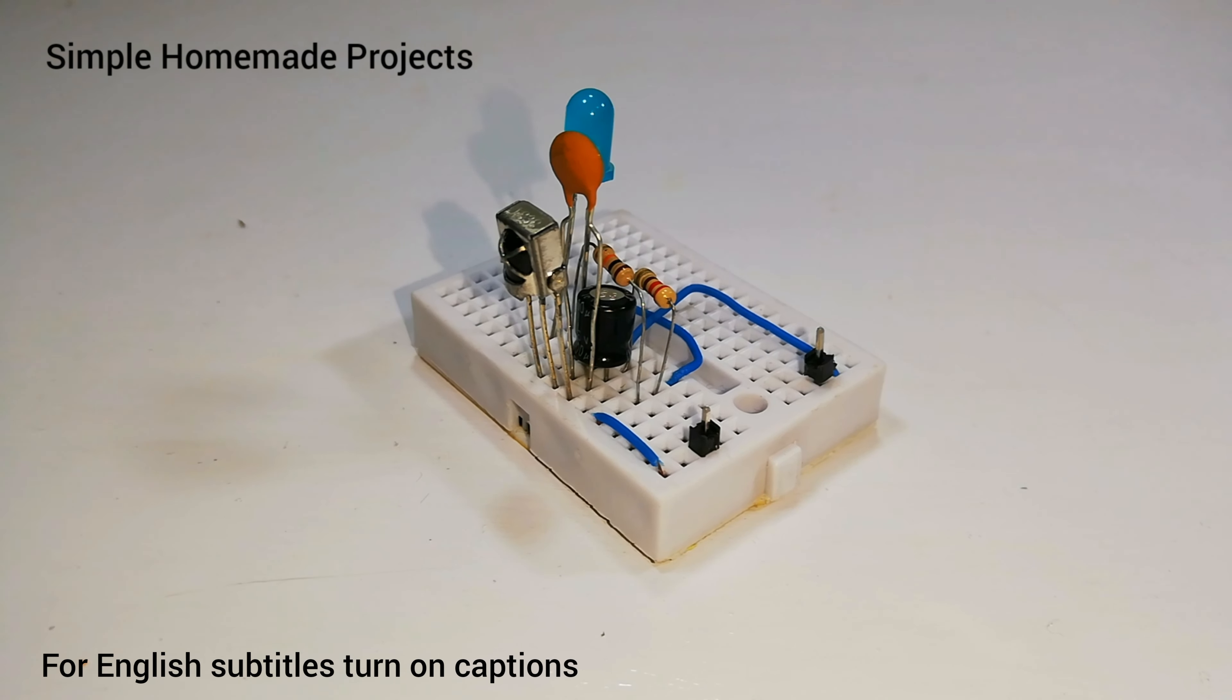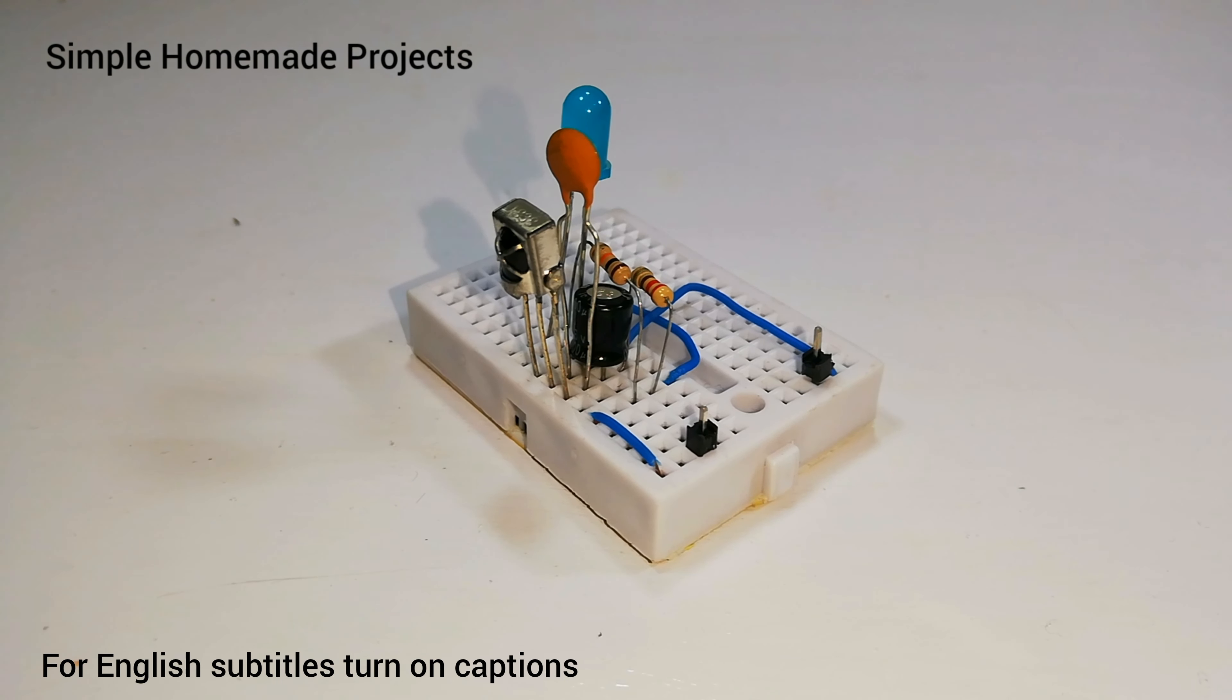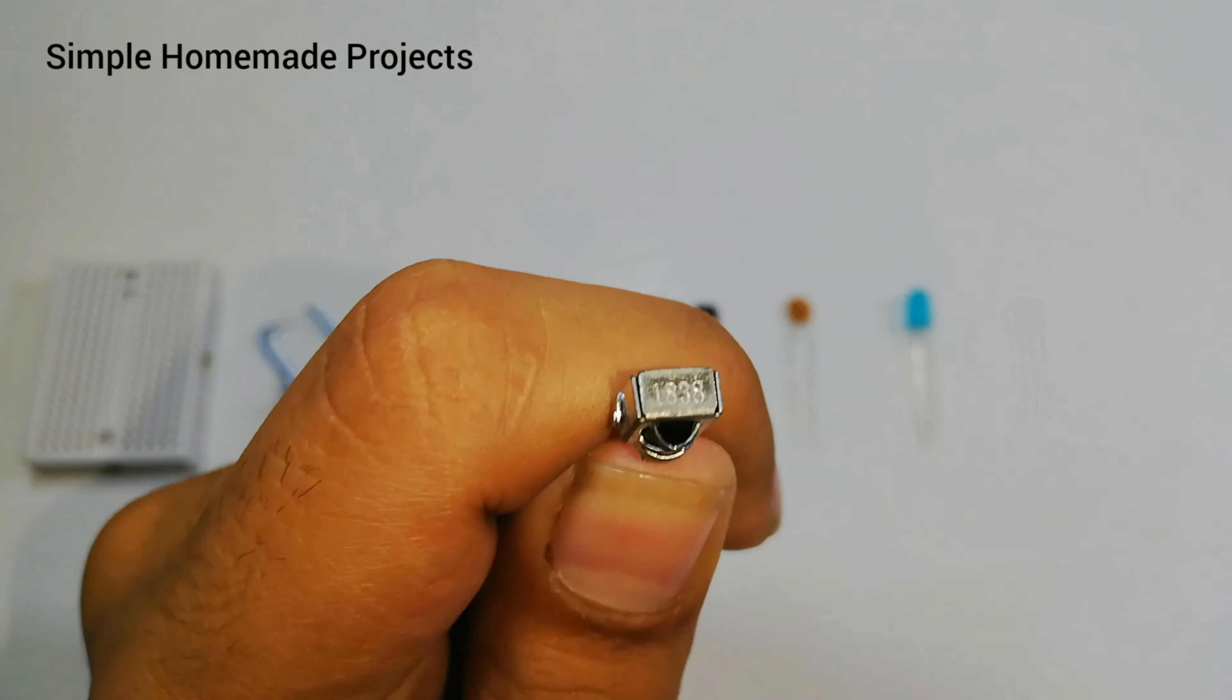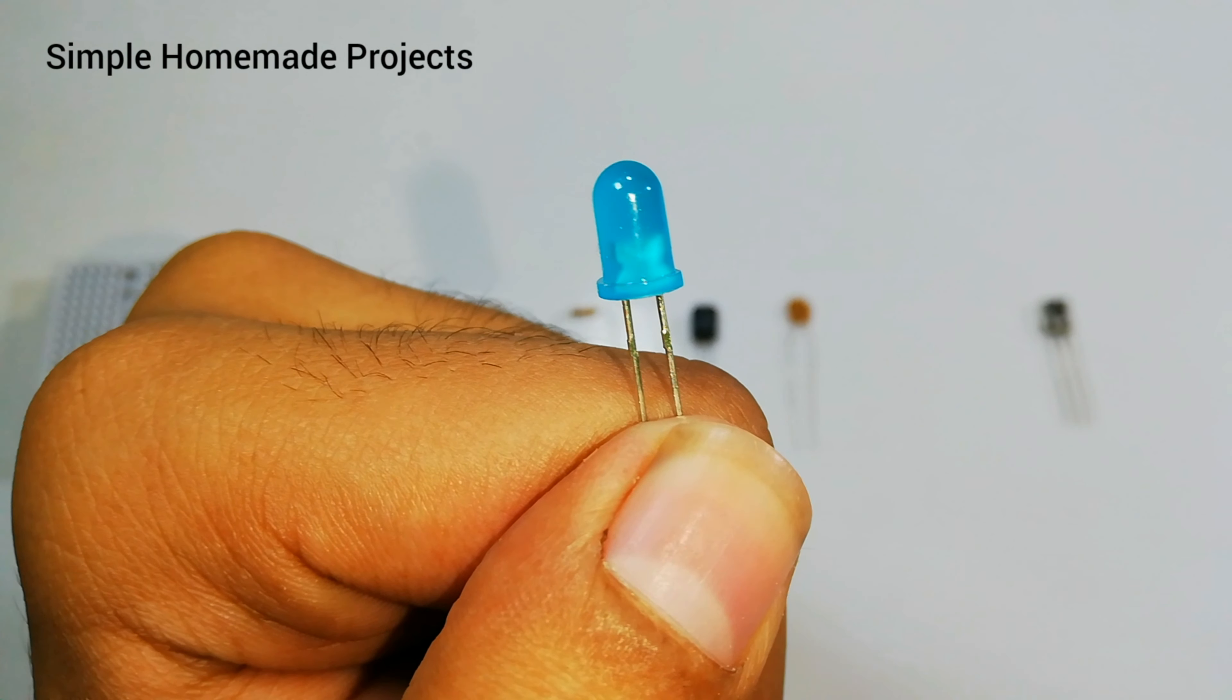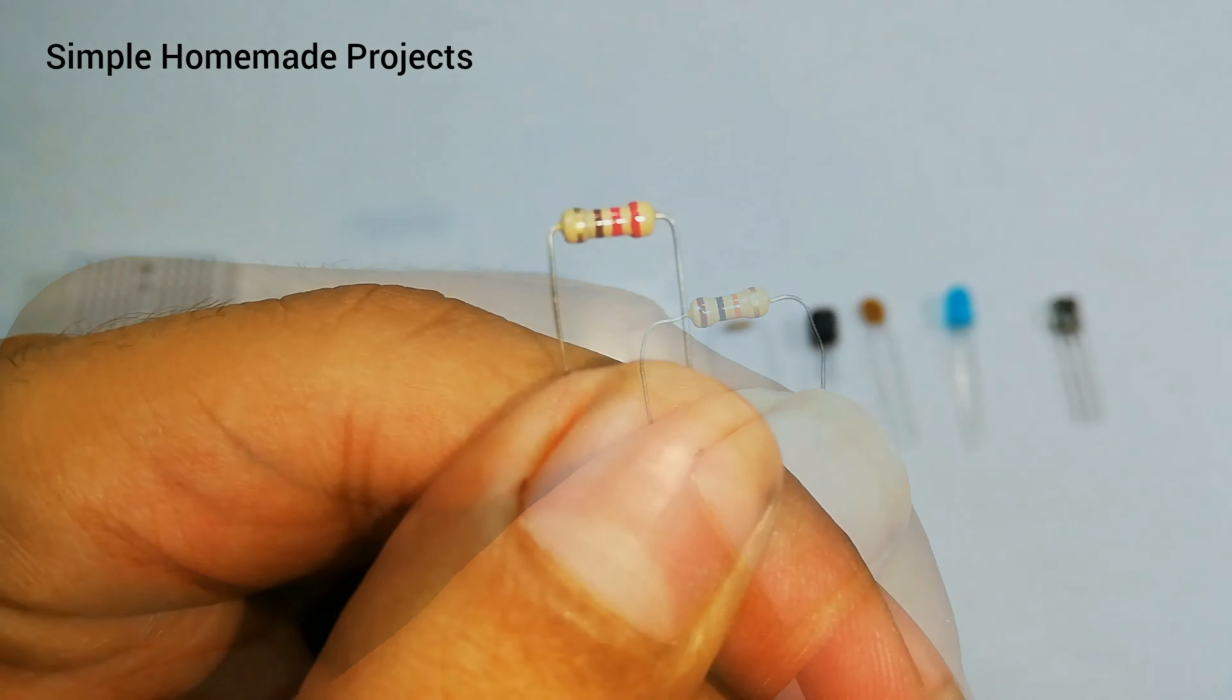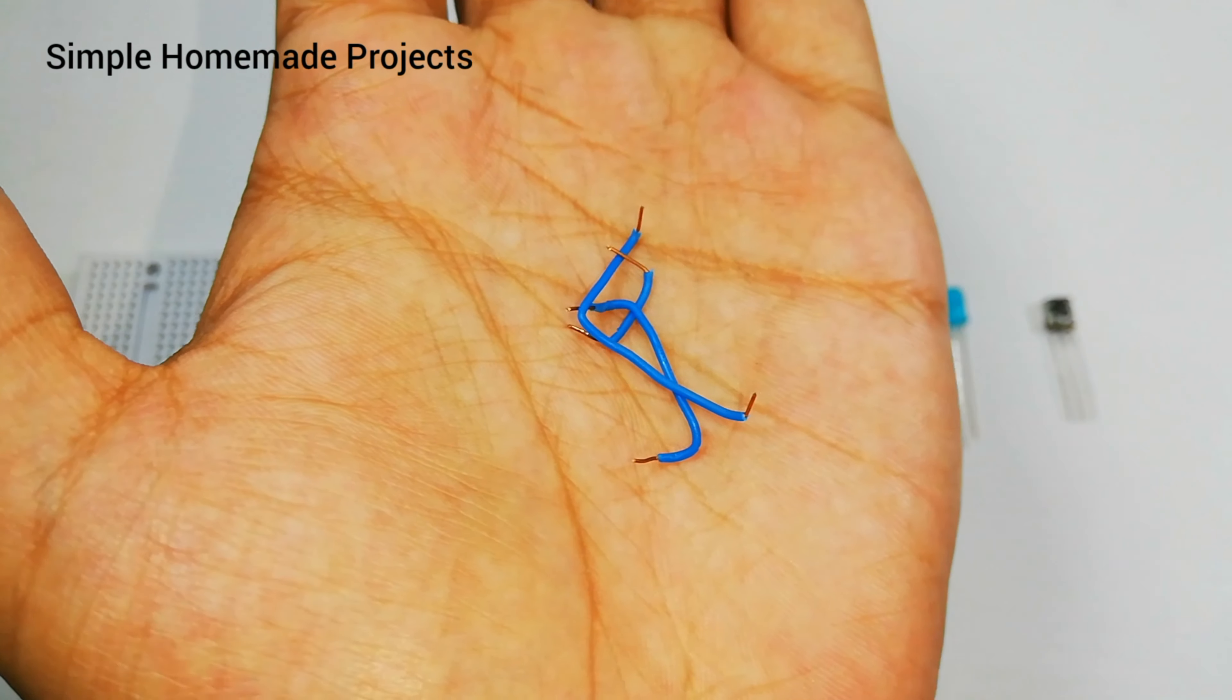Assalamualaikum friends, welcome to Simple Homemade Projects. In this video I am going to make a universal infrared receiver circuit. To make it I am going to use the following components which includes TSOP1838 infrared receiver, LED, 100 nanofarad capacitor, 16 volts 100 microfarad capacitor, 10 kilo ohms resistor, 220 ohms resistor, male headers, jumper wires, and a breadboard.